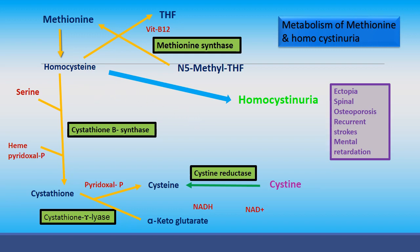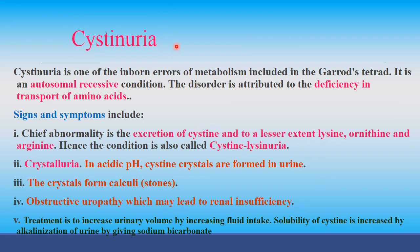The first disorder is cystinuria. It is an inborn error, included in Garrod's tetrad, and is an autosomal recessive disorder. It is due to deficiency in the transport of amino acids. Symptoms include excretion of cysteine and, to a lesser extent, lysine, ornithine, and arginine. Therefore the condition is also known as cysteine-lysinuria.